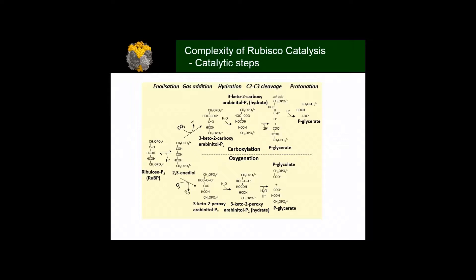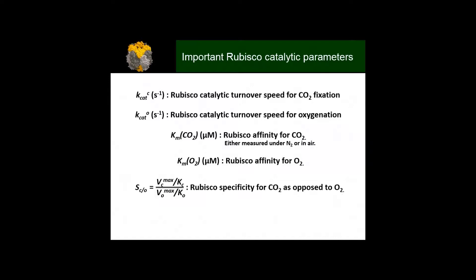This is just to highlight the complexity of Rubisco catalysis. The first committed step is the fixation of either CO2 or oxygen to the enediol. The important kinetic parameters we focus on are the carboxylation turnover speed for CO2 fixation, which we refer to as Kcat, the Rubisco catalytic turnover speed for oxygenation, and the affinities for CO2 and oxygen. The bottom one is what we're focusing on today: the specificity for CO2 as opposed to O2.